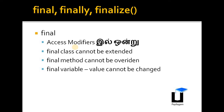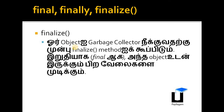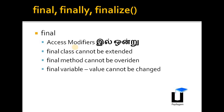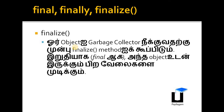This is the final variable. If you apply final to a variable, its value becomes constant and cannot be changed. For example: final int a = 5. This final variable acts as a constant throughout the program.